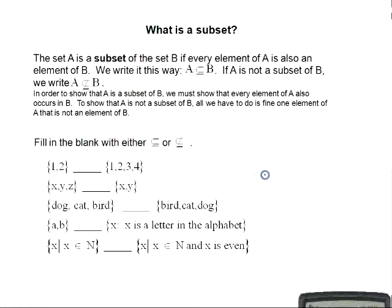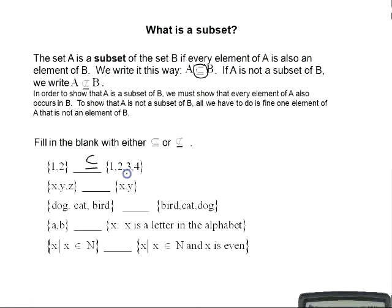What is a subset? Set A is a subset of set B if every element of A is also an element of B. To show A is a subset of B, we must show that every element of A is also in B. To show A is not a subset of B, we just need to find one element of A that's not in B. The set {1, 2} is a subset of {1, 2, 3, 4} because every element of the first set is in the second set.